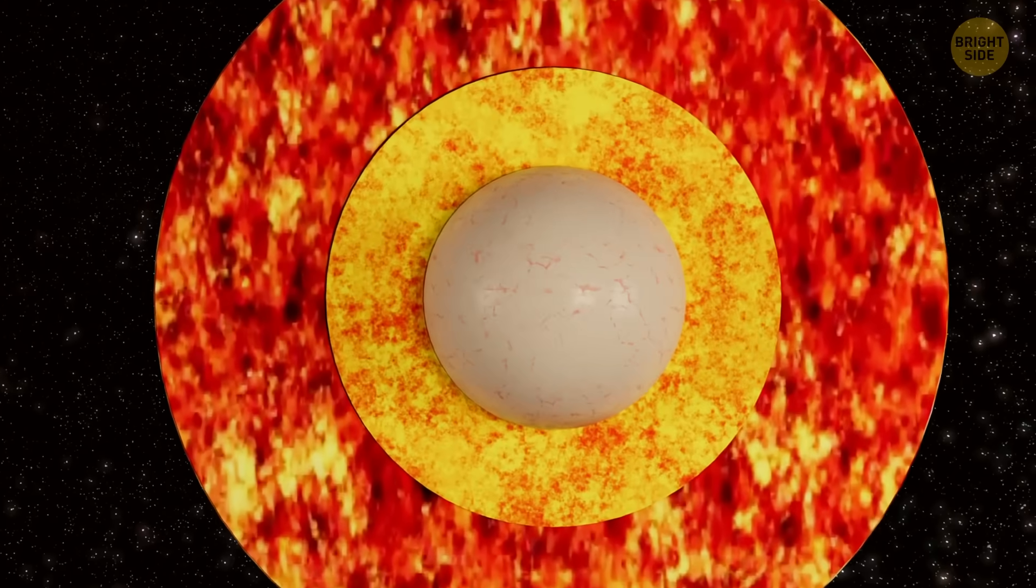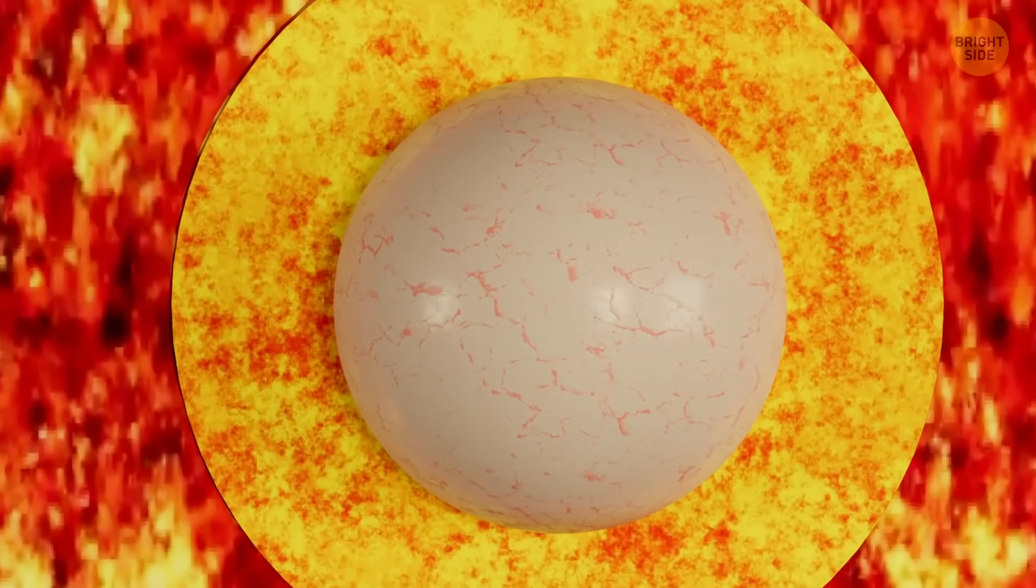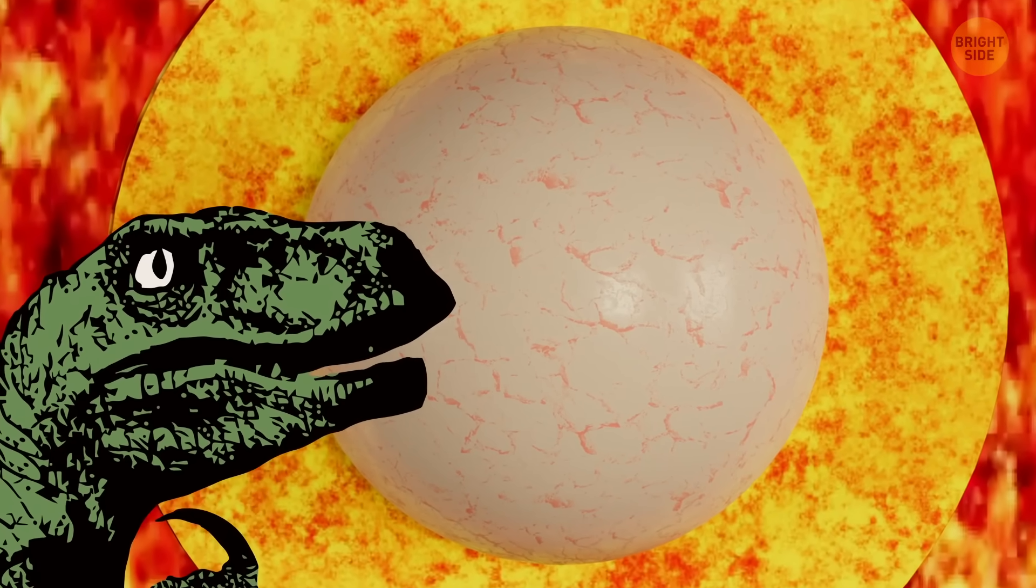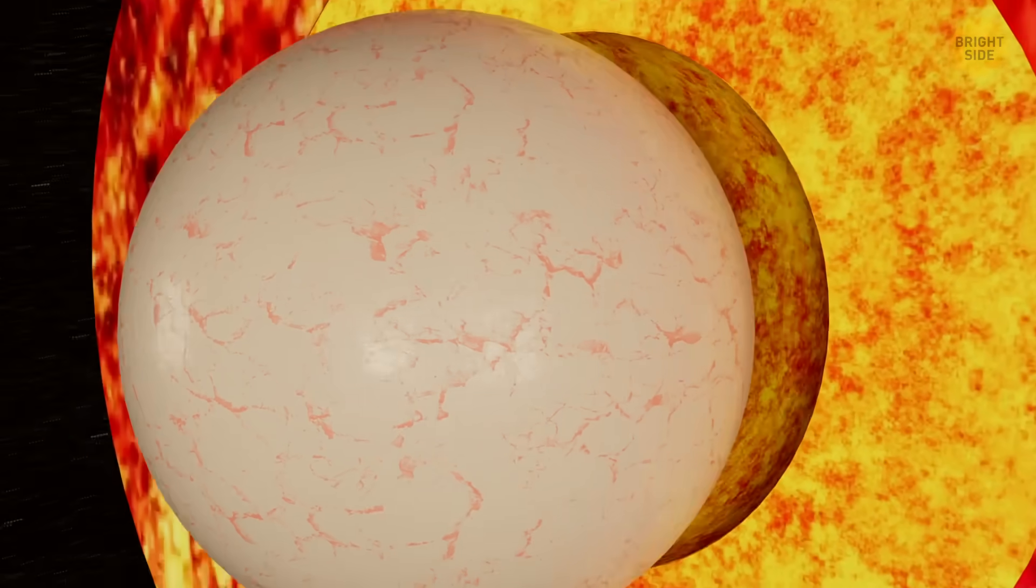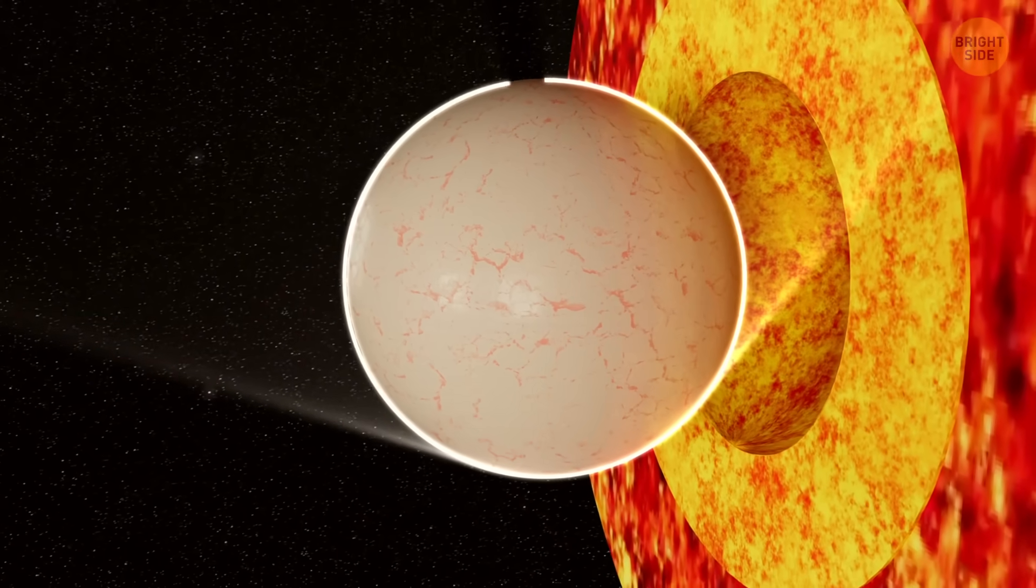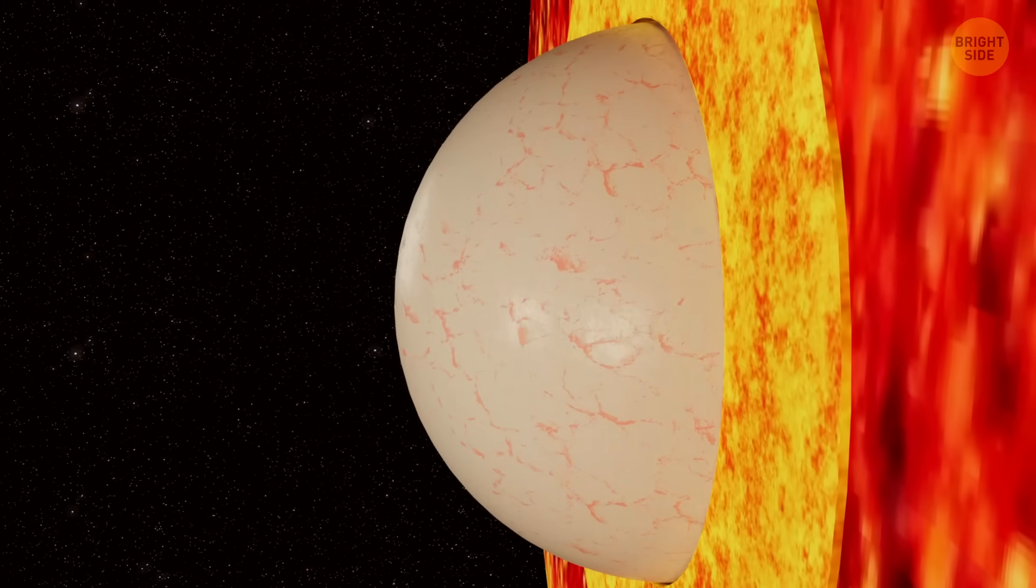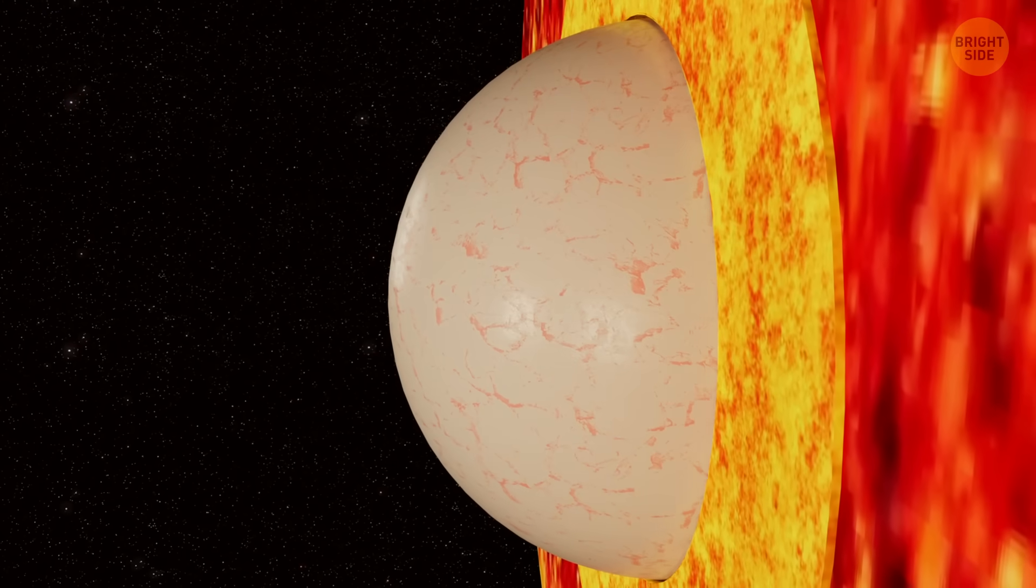But what would happen if Earth's core suddenly stopped spinning altogether? Well, it's unclear, but we can make assumptions. If it was just the solid inner core that stopped, the answer would be, not much. Even if it didn't just slow down its movements, which is happening right now, but stopped altogether.